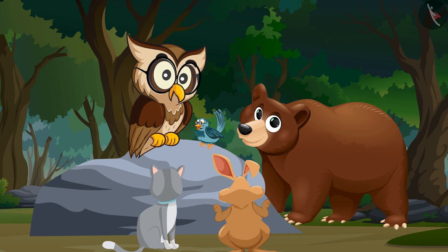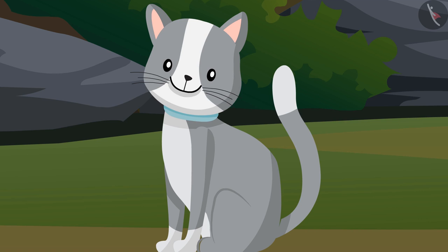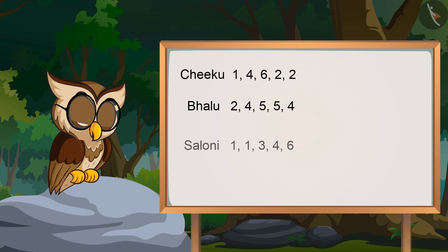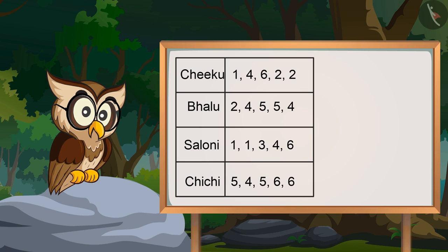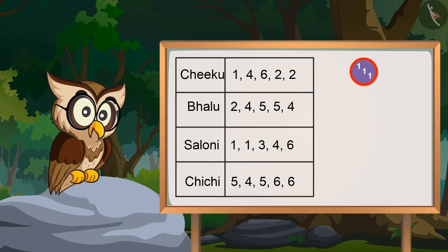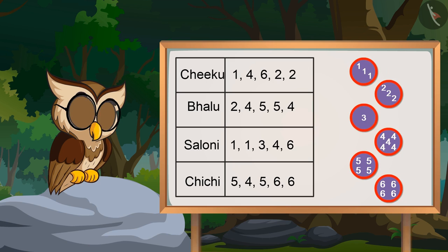What happened? Why are you taking so much time? Because we have to first check how many times each number has hit the dice. Perfect! And for this, we can arrange and write our data in this way. Like we got one for three times, we also got two for three times, and like this we can write four different numbers.